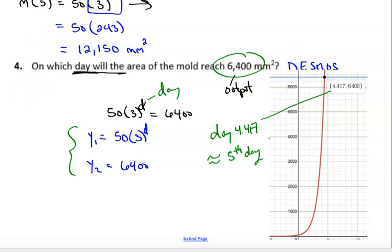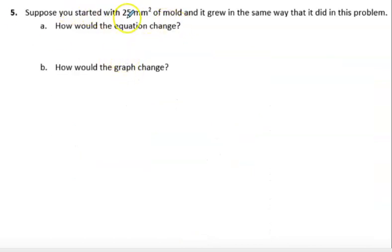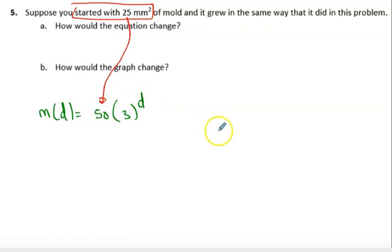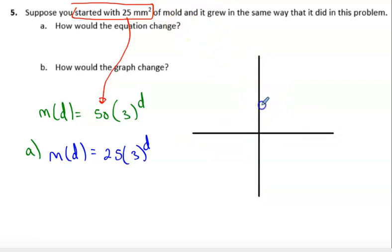All right. So there's part b, numbers one through four, and I think there's a number five here. All right. So suppose you started with 25 millimeters squared. How would the equation change? So again, our equation was m of d is equal to 50 times 3 to the d power. And if I started, so here's my key word that I started with 25 millimeters, that 25 would replace my 50. And it grew in the same way as the problem before. So now everything is going to be exactly the same, except in part a here, my equation would be, I'm going to choose a different color here, m of d is equal to 25 times 3 to the d power. And then how would the graph change? Not much change. It's going to grow the same exact way, except rather than starting at, rather my y intercept here being at 50, I'm going to have a y intercept here at 25. And then it'll shoot up in the same manner of getting three times bigger each time.